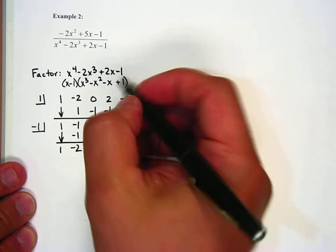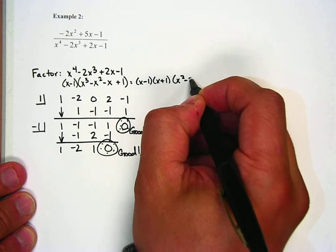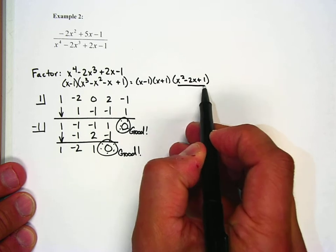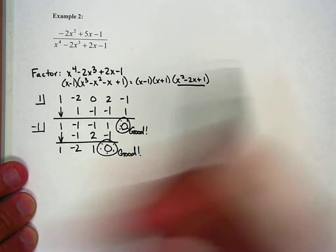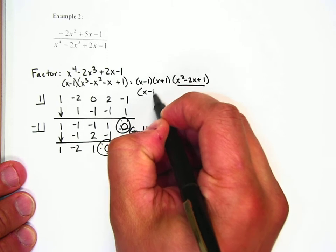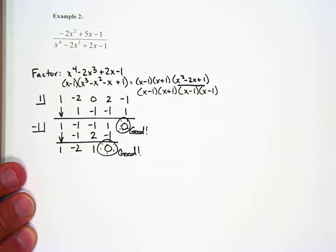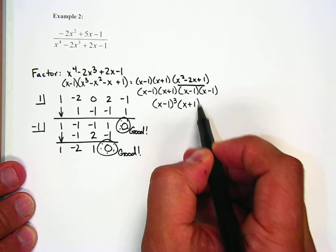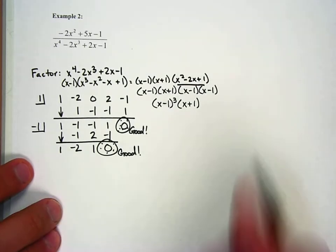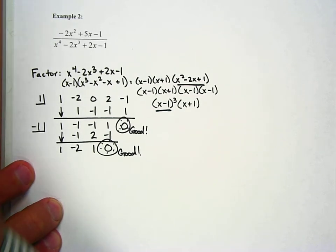So now this breaks down into x minus 1, x plus 1, and x squared minus 2x plus 1. That last factor is factorable — it's x minus 1 times x minus 1. So the full factorization is x minus 1 to the third power times x plus 1. This is a repeated linear factor, not a repeated quadratic.